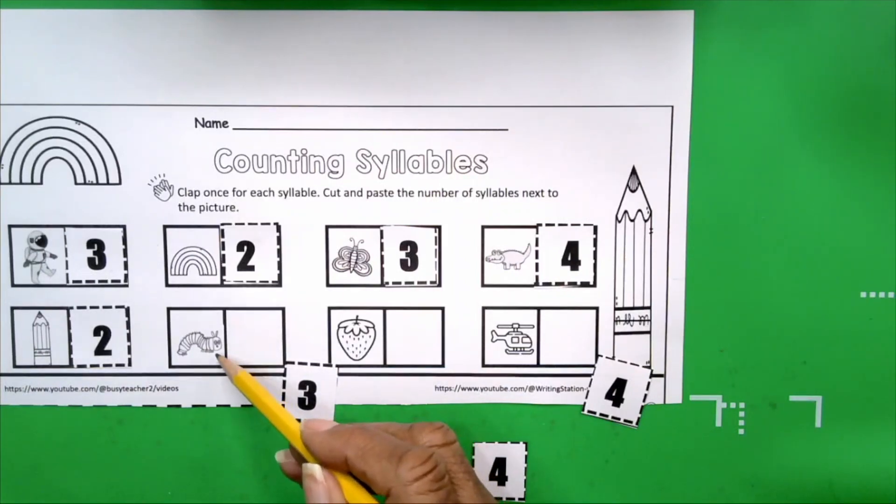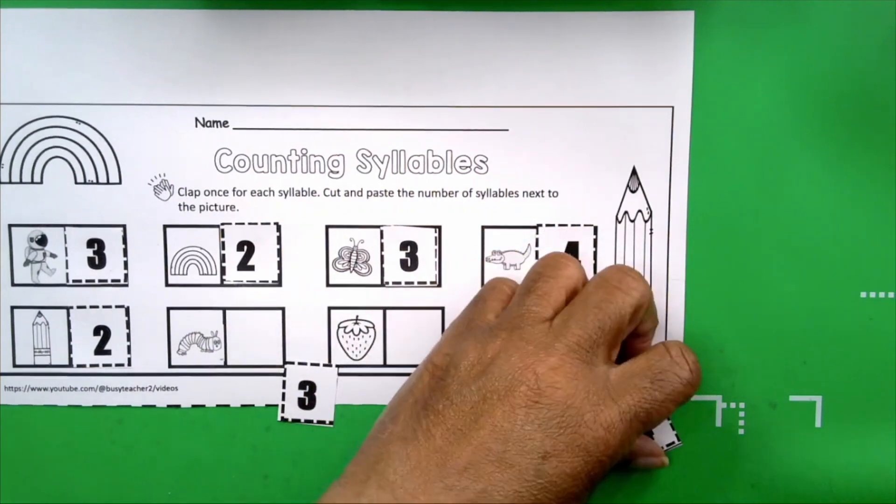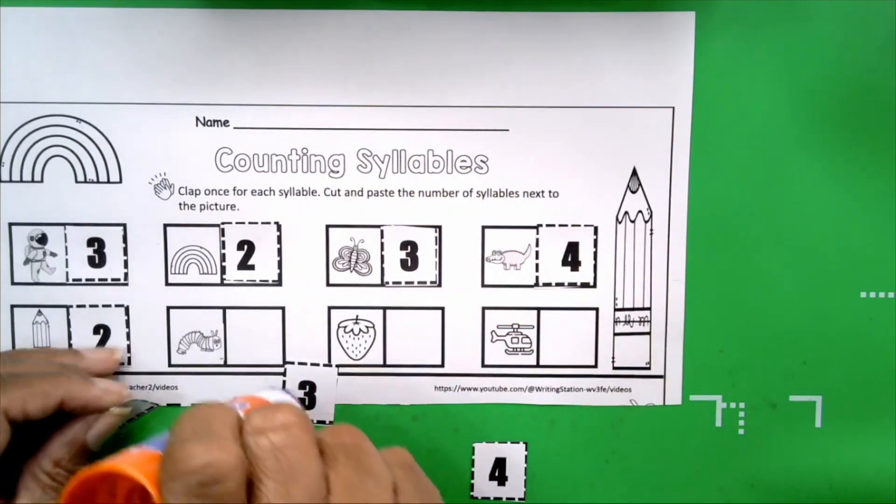Take a look at our next picture. Get your hands ready. Caterpillar. How many claps? Four. How many syllables are in the word caterpillar? Four. Take your number four.